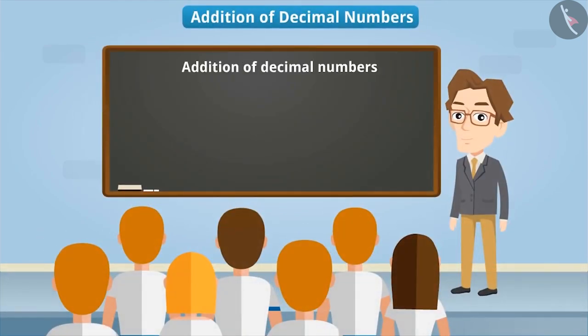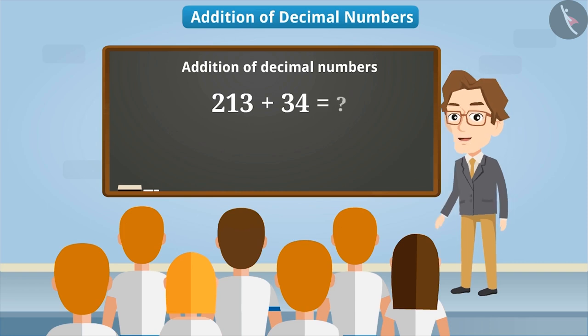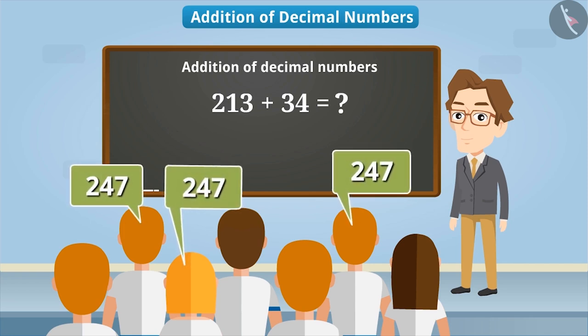In a classroom, the teacher was teaching the topic addition of decimal numbers. The teacher asked the students the sum of 213 and 34. The students answered 247 very easily. Everyone was happy that they had answered it quickly.